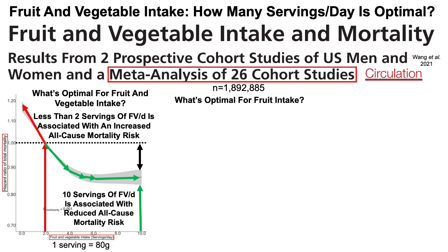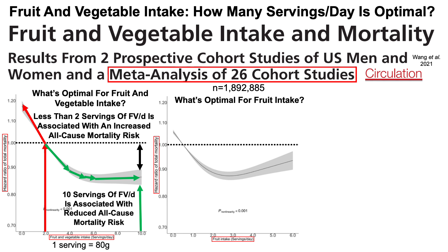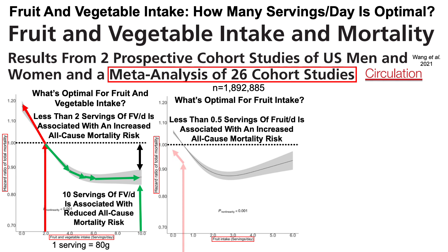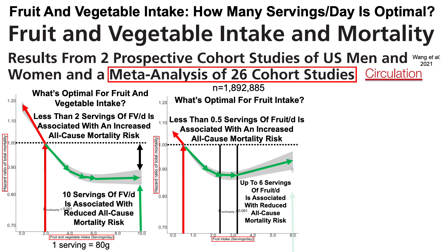Let's look at what's optimal for fruit intake, with all-cause mortality risk on the y-axis plotted against fruit intake on the x-axis. For people who consume less than half a serving of fruit per day — less than 40 grams — that was associated with a significantly increased all-cause mortality risk. As fruit intake increased up to about three servings per day, we see the lowest all-cause mortality risk. Although risk appears to increase at higher intakes, six servings of fruit per day was still significantly associated with a reduced all-cause mortality risk.